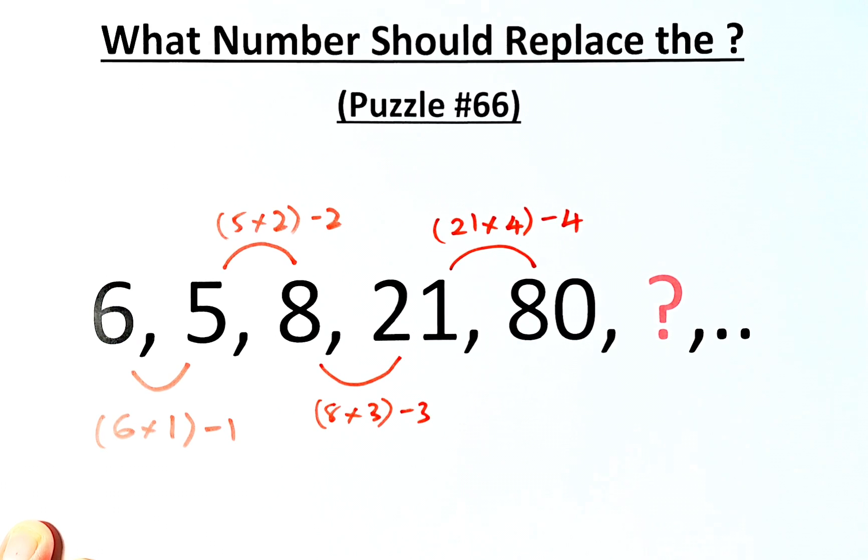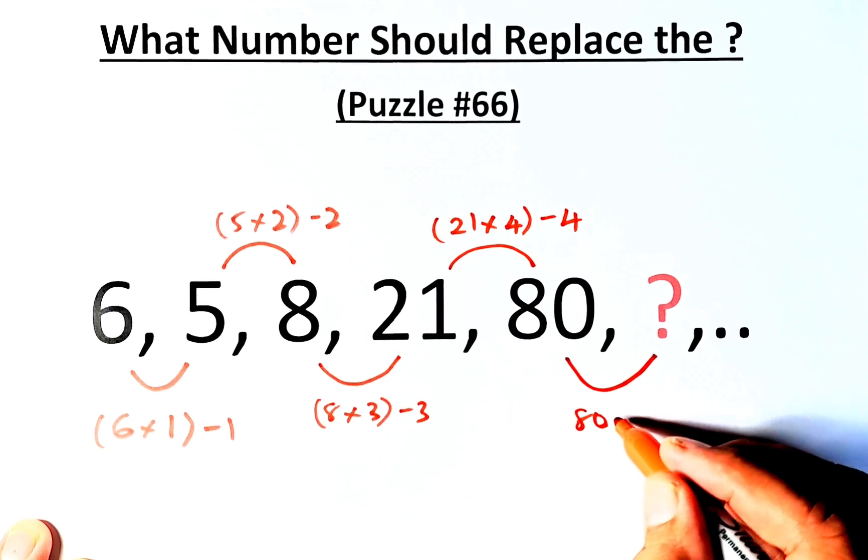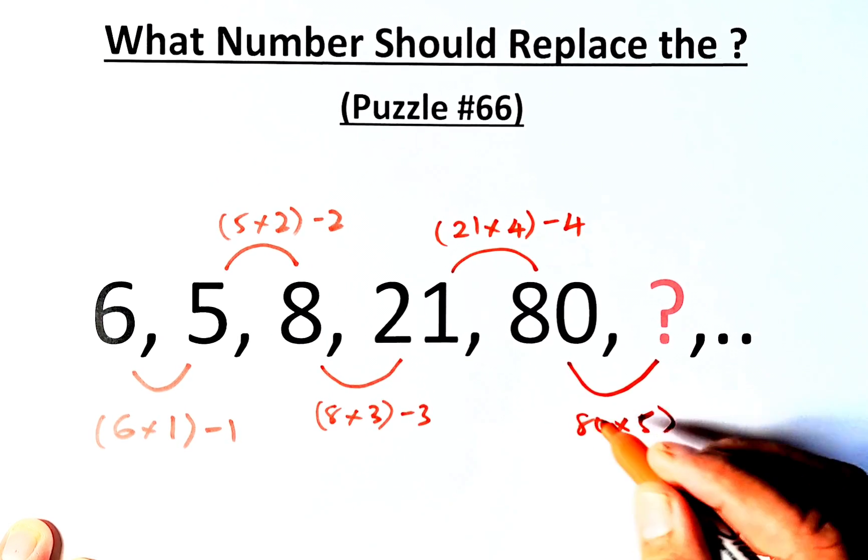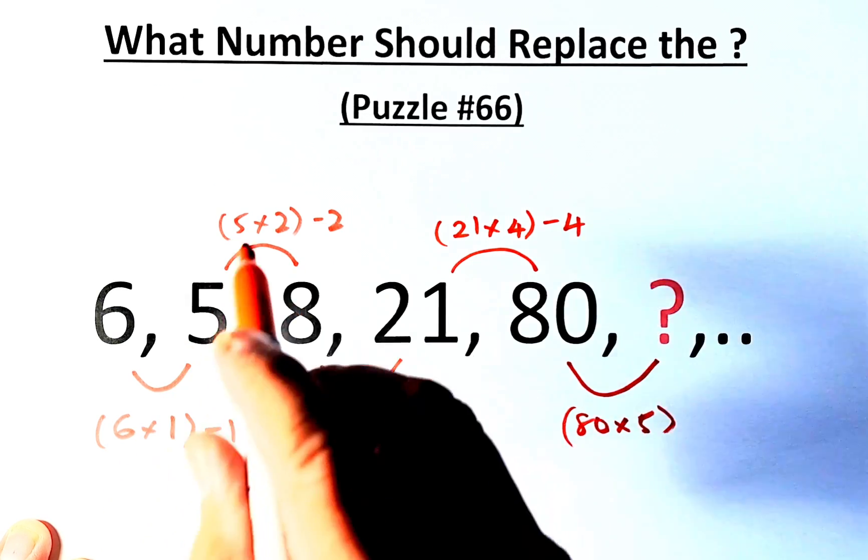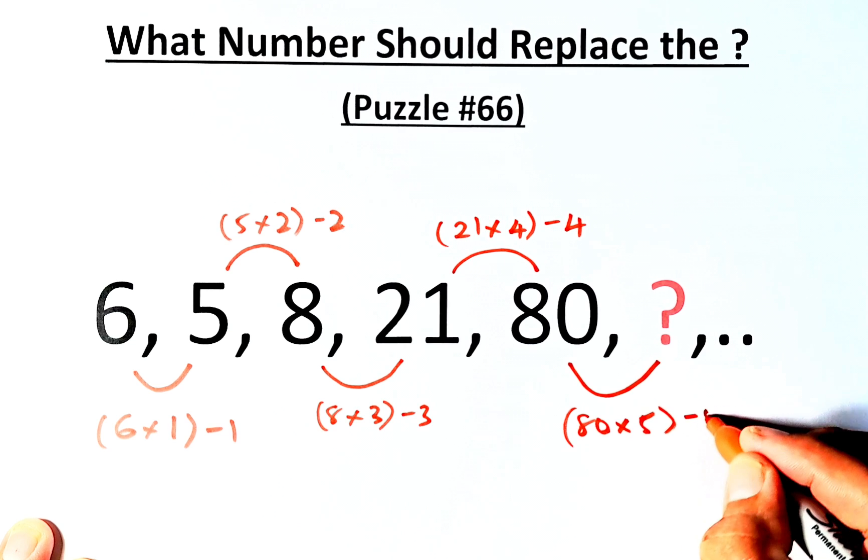And last but not least, from 80 to the question mark, what we're going to do is that we are going to take 80, multiply by 5, because so far we have taken times 1, times 2, times 3, times 4, times 5, and then minus 1, 2, 3, 4, and we're going to minus 5.